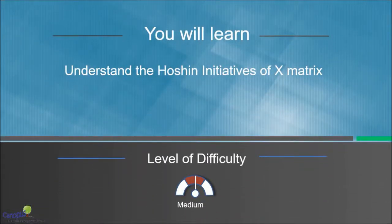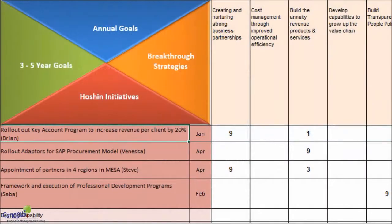In this lecture, we will talk about Hoshin initiatives that you see in the X matrix. As I mentioned earlier, Hoshin initiatives are nothing but strategic projects. And the purpose of these projects is to make sure that we achieve our goals using the strategy. So, the linkage is strongly to the strategy.